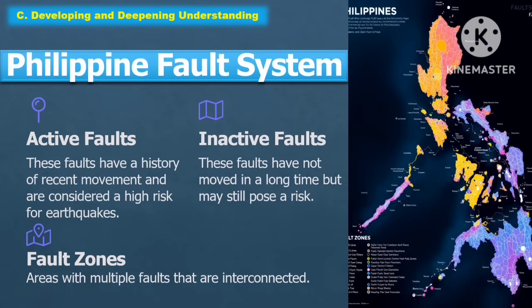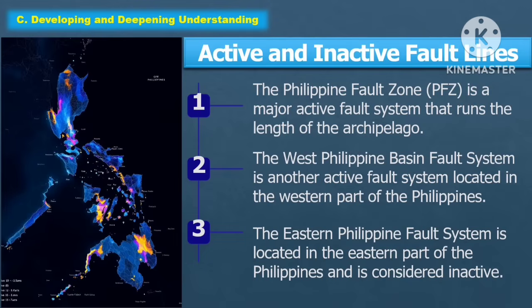The following are the Philippines fault systems. The first is active faults — these faults have a history of recent movement and are considered a high risk for earthquakes. The second is inactive faults — these faults have not moved in a long period but may still pose a risk. The third is fault zones — areas with multiple faults that are interconnected. The Philippine fault zone is the major active fault system that runs the length of the archipelago. The West Philippine basin fault system is another active fault system located in the western part of the Philippines. The Western Philippines fault system is located in the eastern part of the Philippines and is considered inactive.